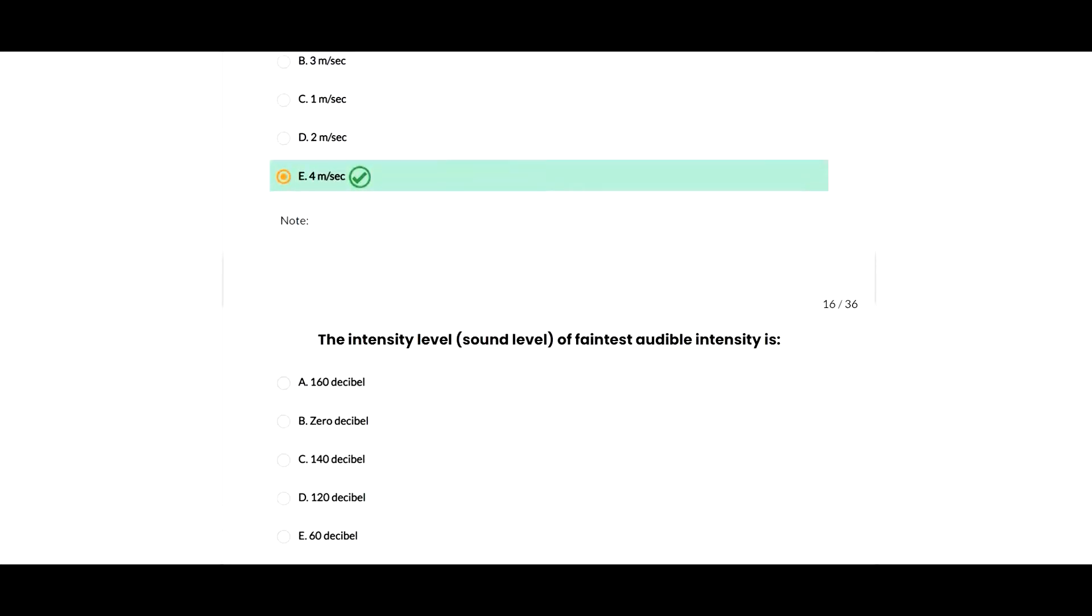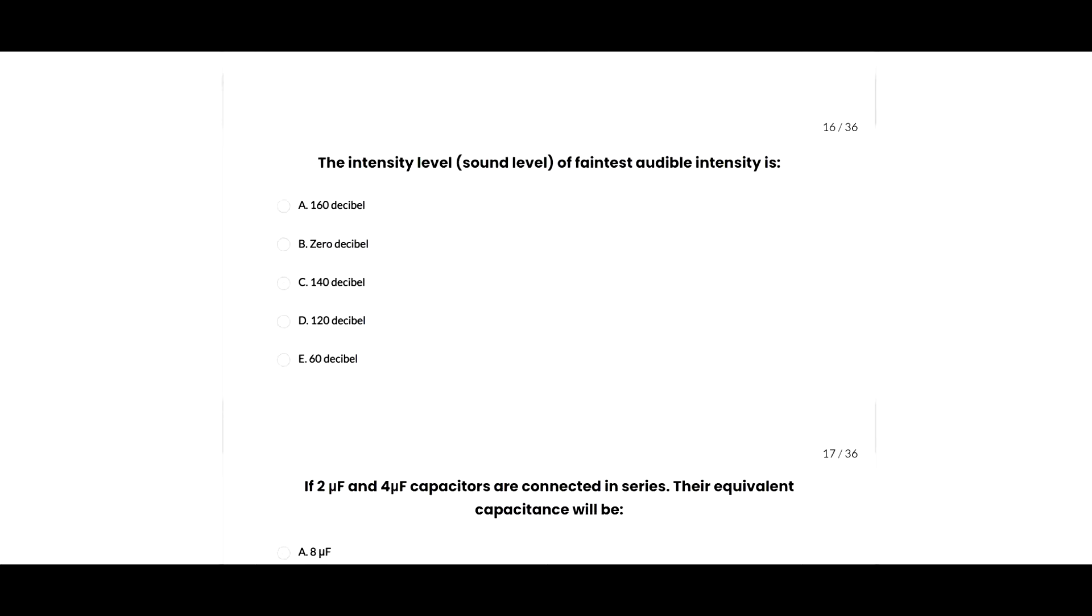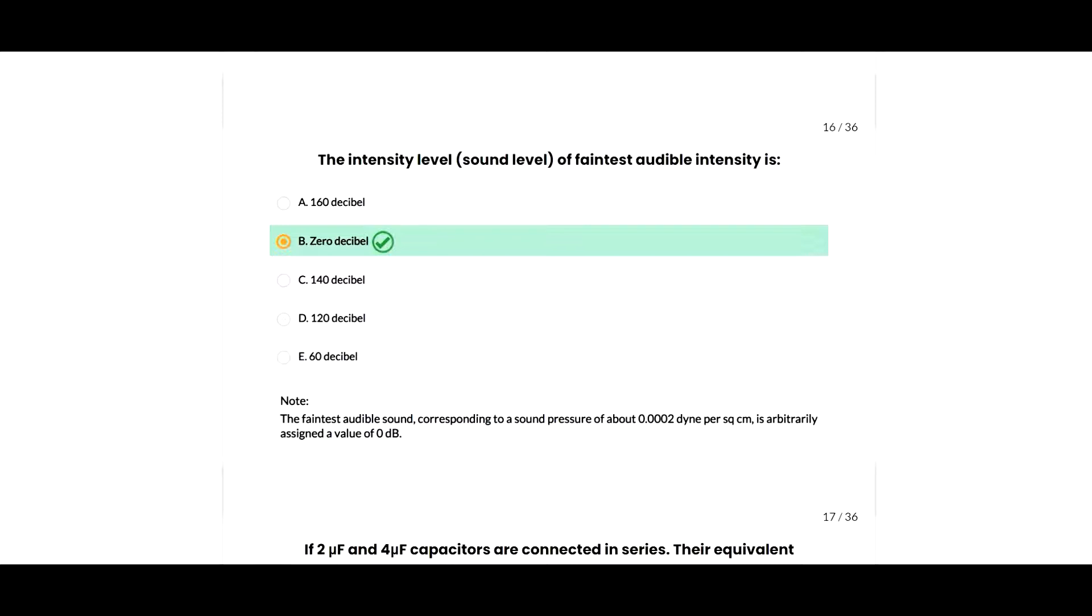Next question: a box of mass 6 kg sliding at 4 meters per second across a frictionless floor suddenly explodes into two pieces. One piece with M1 equals 2 kg moves in the same direction at V1 equals 8 meters per second. The velocity of the second piece will be given as 4 meters per second. Next question: the intensity level of the faintest audible sound will be given as 0 decibel, so B option is correct.